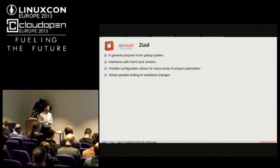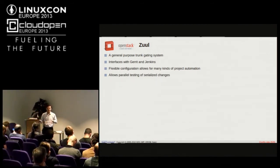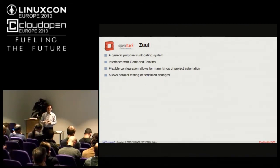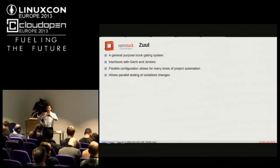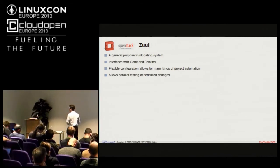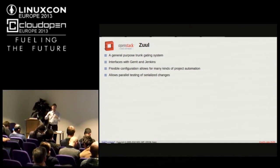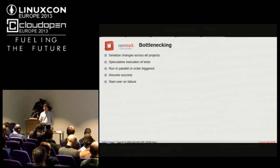Now that we've got all those tests running as quickly as we can, we still want to be able to merge changes even faster. So we wrote a system called Zuul, which is a general-purpose trunk gating system. Its kind of mind-warping feature is that it does speculative execution of tests — it runs a lot of tests in parallel and assumes they're all going to pass. If they all do pass, then all of those changes can merge. If they don't pass, then it goes back and figures out which change failed, kicks that out, and runs through again.